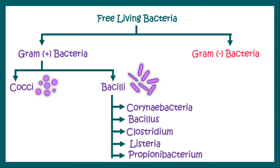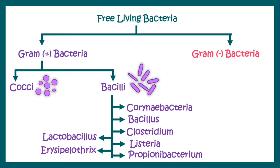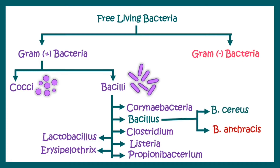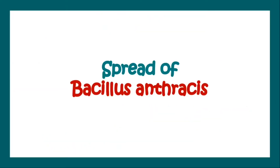Gram-positive bacilli can be Corynebacterium, Bacillus, Clostridium, Listeria, Propionibacterium, Lactobacillus, or Erysipelothrix. Our discussion will be about Bacillus, and under Bacillus, we have two important species: Bacillus cereus and Bacillus anthracis. Today we will talk about Bacillus anthracis.